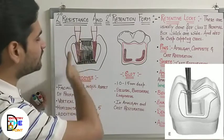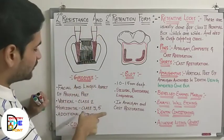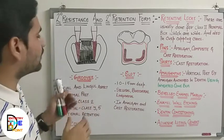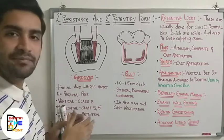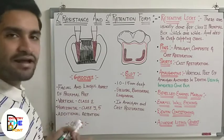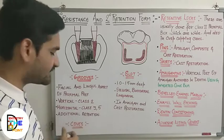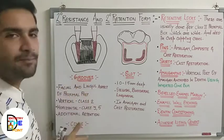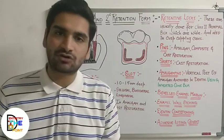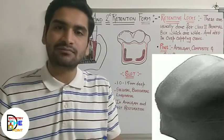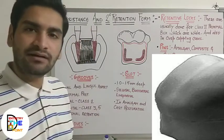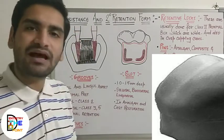Grooves made in class 2 cavities are vertical indentations, while those in class 3 and class 5 cavities are made as horizontal indentations. Their main purpose is to provide additional retention and resistance form to the cavity.